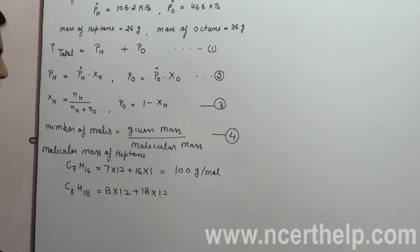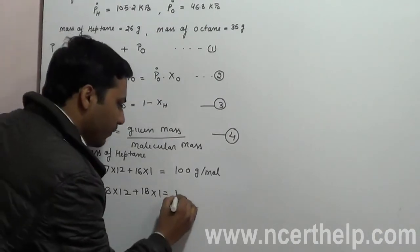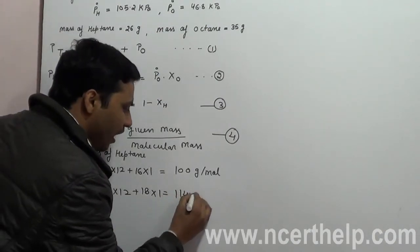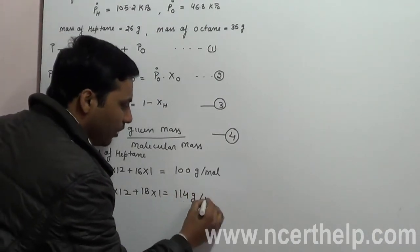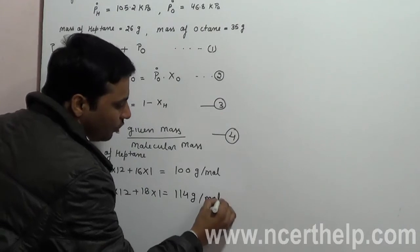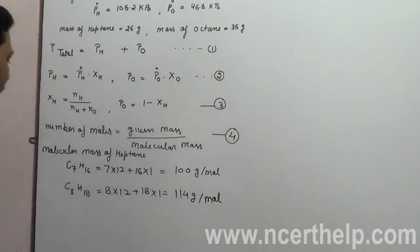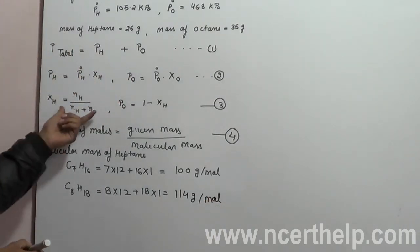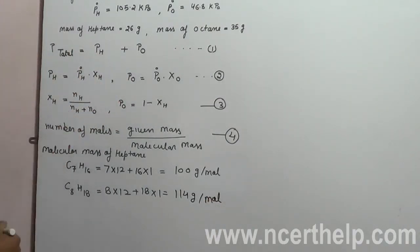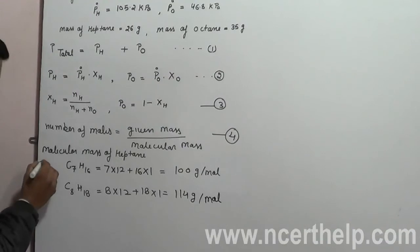After calculation we get 114 grams per mole for octane.